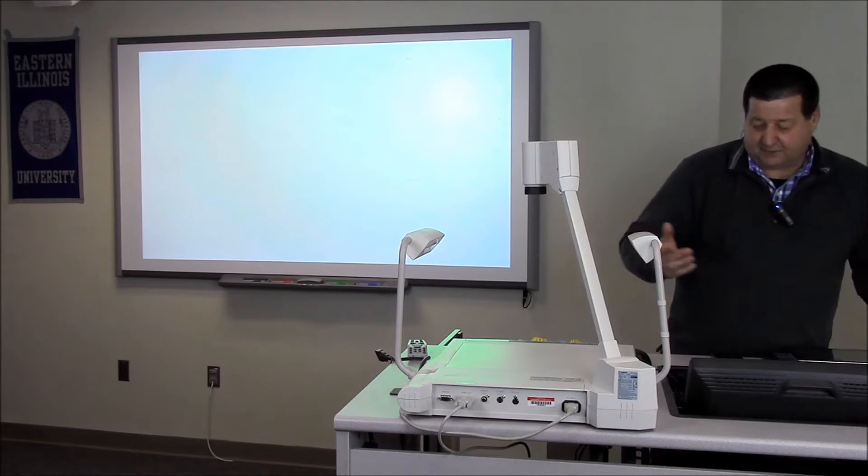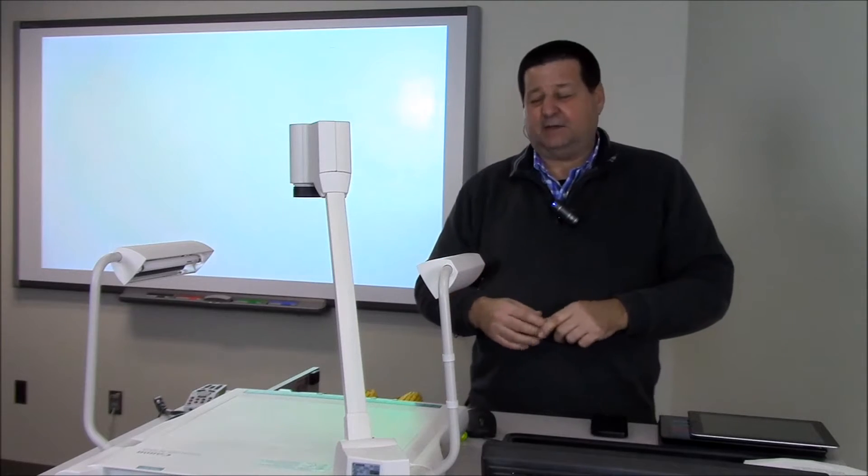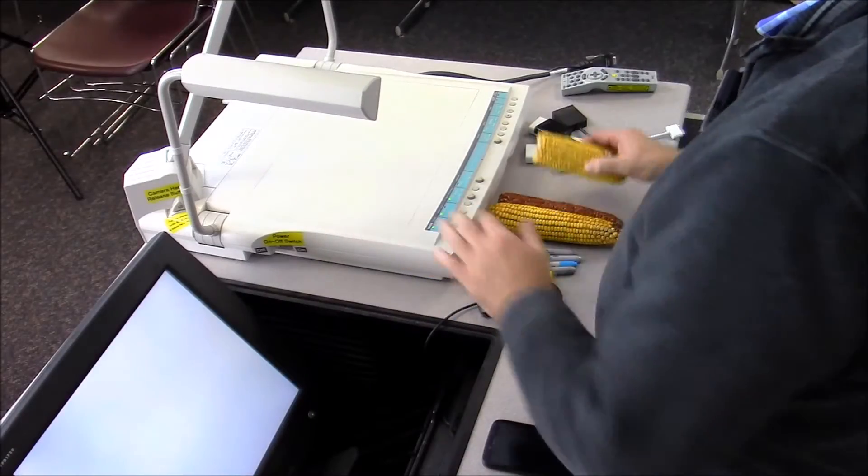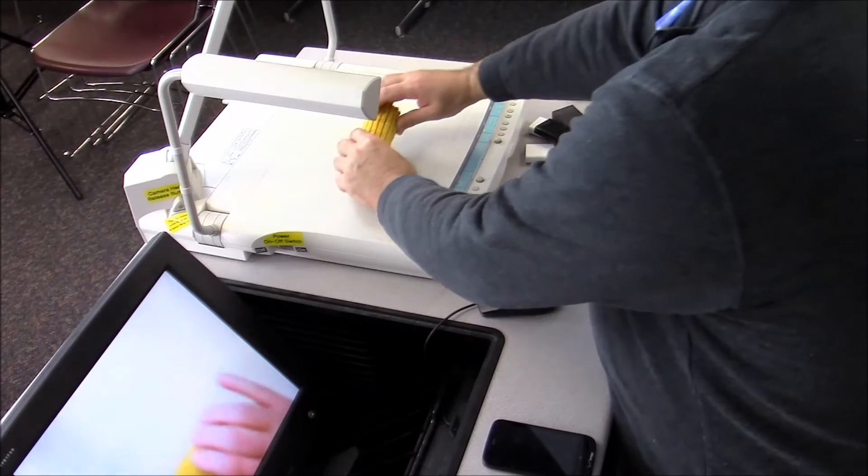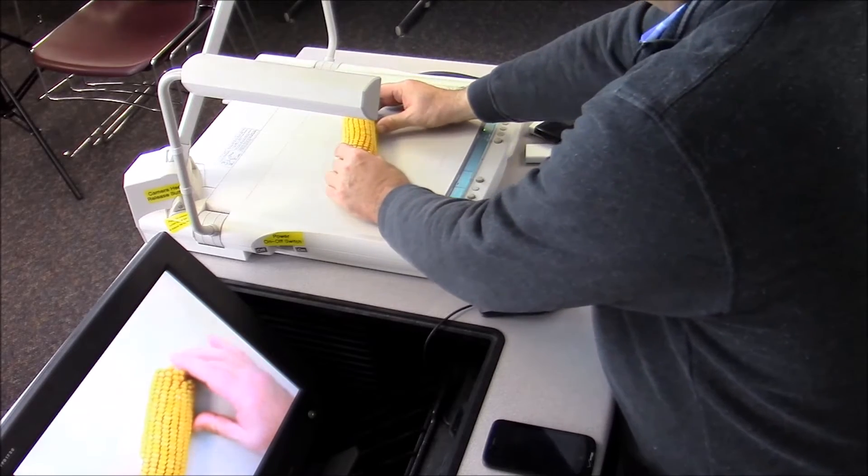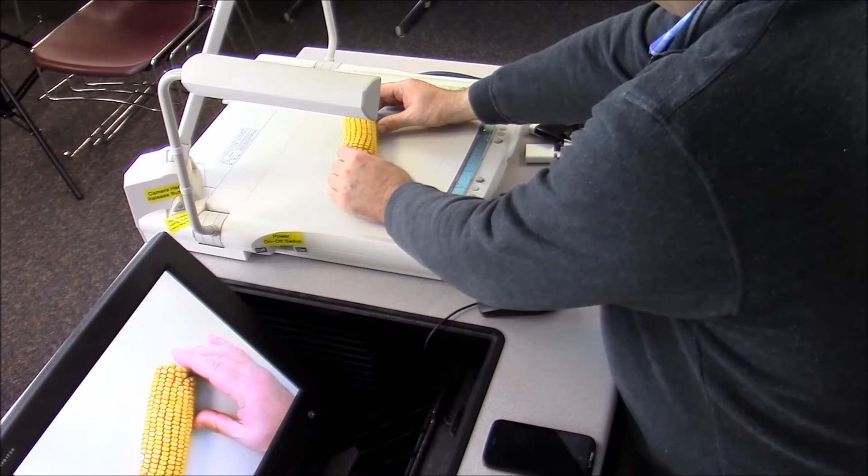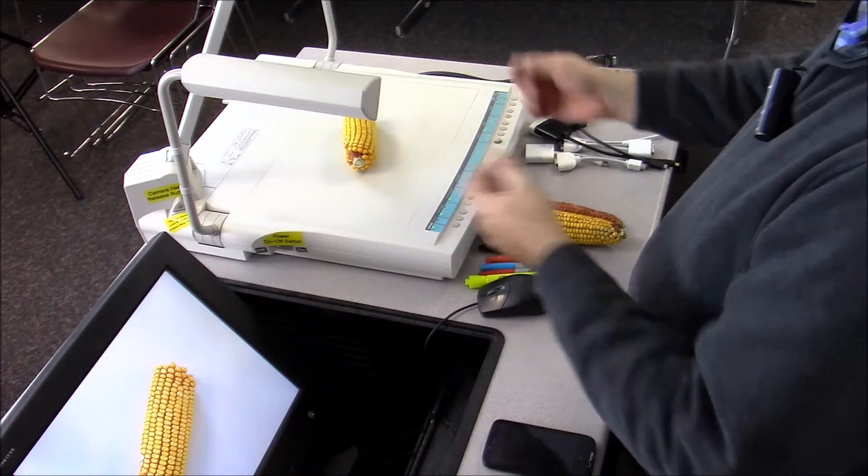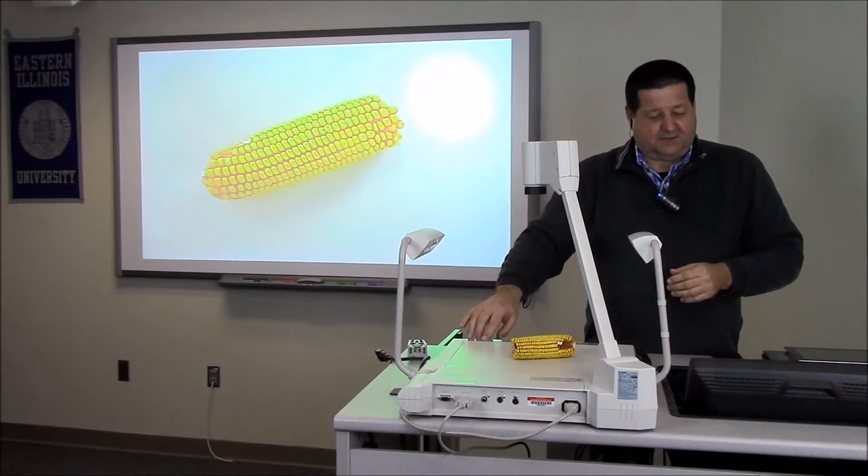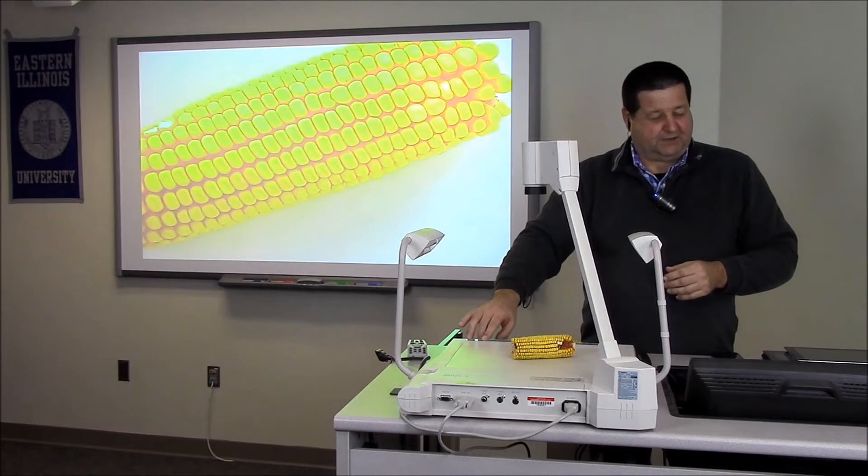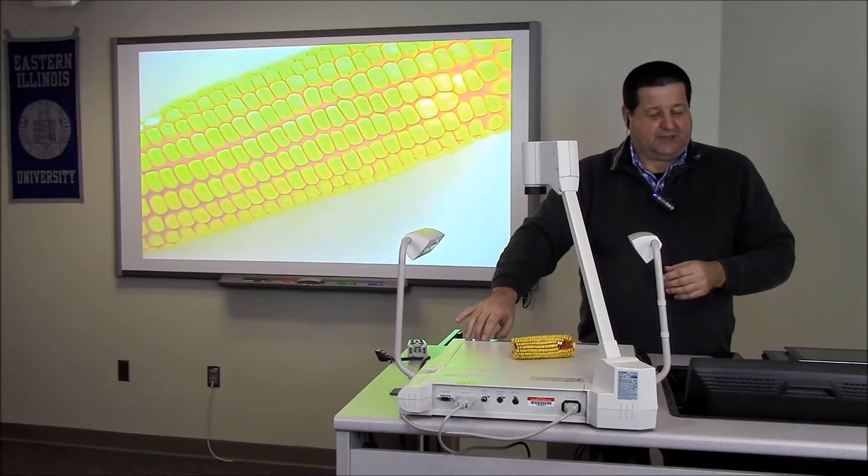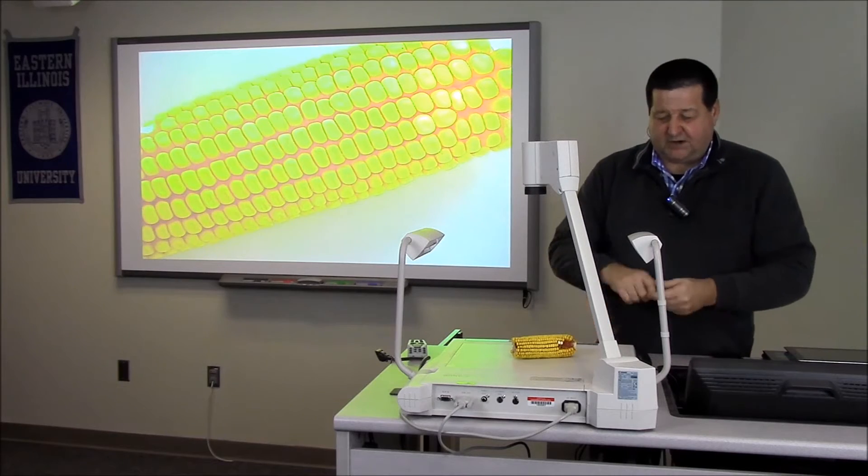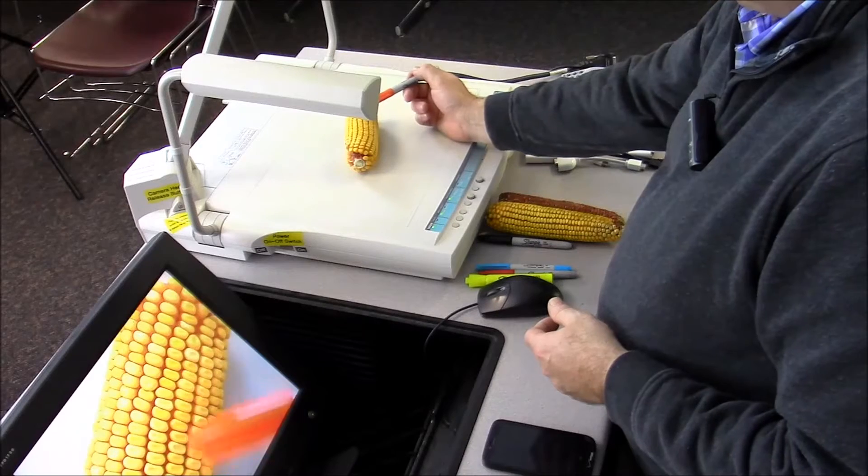I however like to use it for three-dimensional items. Any item that you can place on the document camera safely. Let's do an example. Let's say we're doing a science unit on plants and farming and we're going to look at an ear of corn. I can simply place that three-dimensional object onto the document table, zoom in, and you can very easily draw the students' attention to whatever you want them to pay attention to.